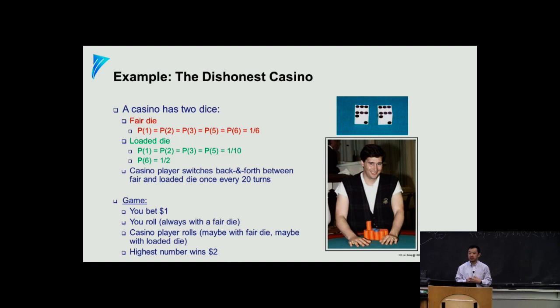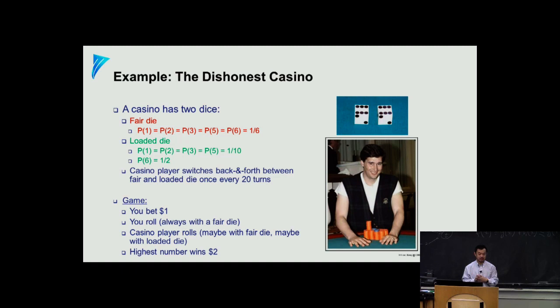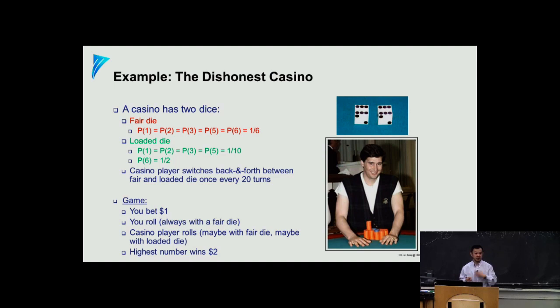So here is a simple, fun example. You go to a casino — anybody been to Atlantic City or Las Vegas? You are told there can be some tricks in certain places. One trick is that there can be two dice used by the dealer: one is a fair die, and the other is a loaded die with the following property — face six has a probability of one-half to appear when you roll it, and the other faces split the remaining probability mass. There's a game: if he gets six, you pay him; if you get six, he pays you.